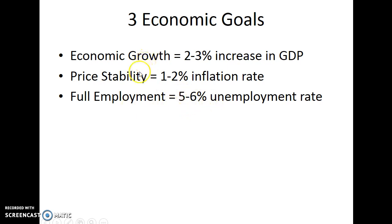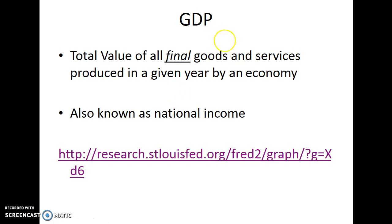Each one of these — GDP, inflation, and unemployment — have their own screencast. In the unemployment one, we'll talk about why even having a percentage of unemployment is considered a goal or acceptable. For GDP, we're looking at the total value of all final goods and services produced in a given year by an economy. The word 'final' is really important in the definition — you have to use it — and the GDP screencast will explain why using the word 'final' is necessary.